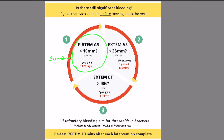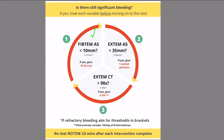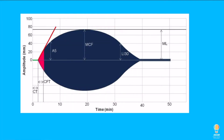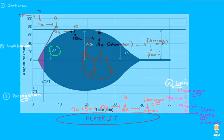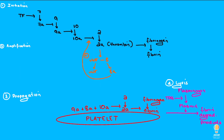Step 2: once your FibTem A5 is normal — that is, above 10mm — look at the A5 on the XTem, that is, the amplitude of the clot on the XTem assay at 5 minutes. Remember, the XTem A5 does not isolate fibrinogen function, and hence, with a normal FibTem A5, the XTem assay will tell you about a deficiency of platelets in the propagation phase.